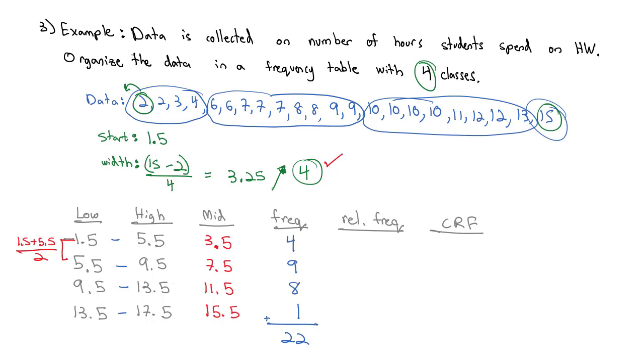But then to find my relative frequencies, my relative frequencies take that frequency of 4 and divide by the total number of values, which is 22, to get my relative frequency value of 0.1818. And we go all the way down doing the same thing. There were 9 in the second class. Out of 22 gives me a relative frequency of 0.4091. The next class had 8 of the 22 values, that's going to give me a relative frequency of 0.3636. And the last one has 1 out of the 22 values, that's going to give me a relative frequency of 0.0455.